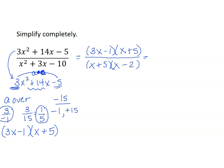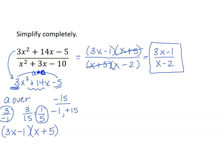If we had to list restrictions, this would be the point to do it — but this question doesn't ask for them. Continuing to simplify: x plus 5 over x plus 5 cancels to 1 since any number divided by itself is 1. Our completely simplified rational expression is 3x minus 1 over x minus 2.